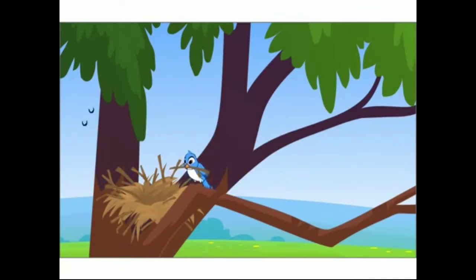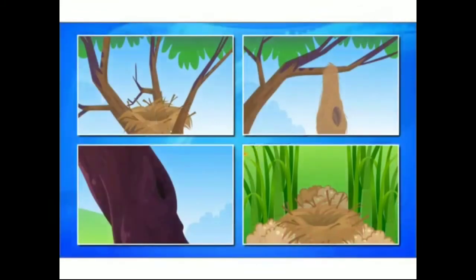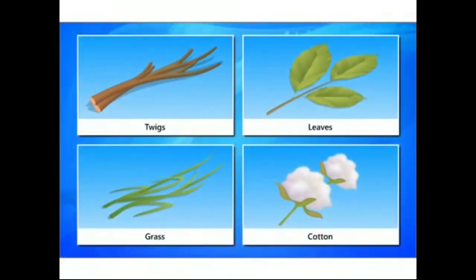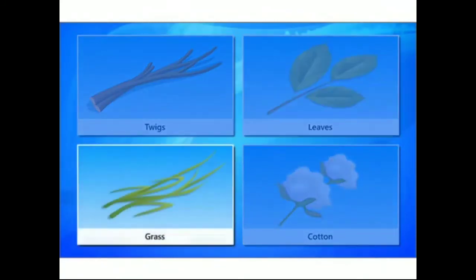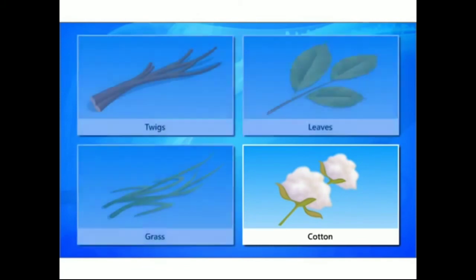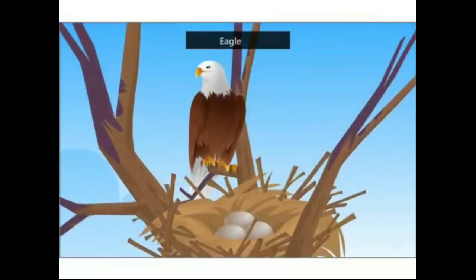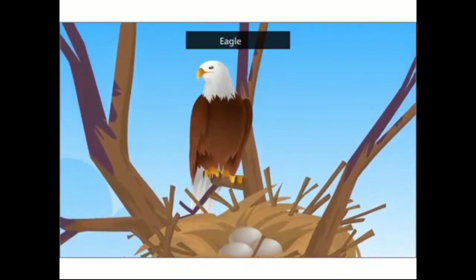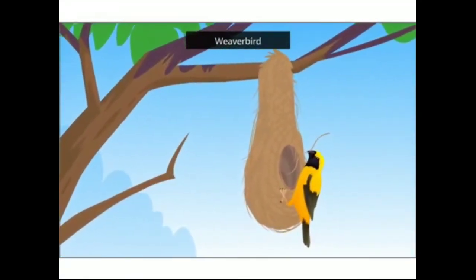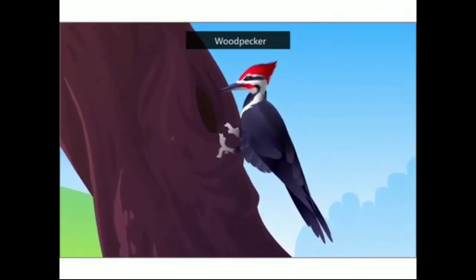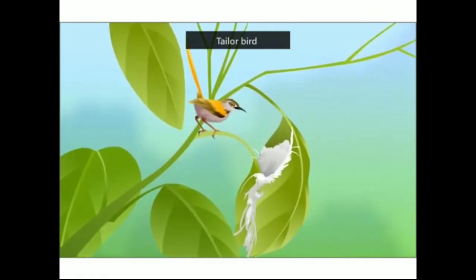Birds build a new nest every time they have to lay eggs. Different birds build different kinds of nests. Most birds use twigs, leaves, pieces of grass, thread or cotton to build their nests. Some birds even use pebbles and mud. Eagles build their nests on trees with sticks and twigs. Weaver birds build hanging nests, tying dry grass and twigs into knots. A woodpecker makes a hole in a tree trunk. The tailor bird stitches leaves together to make a nest.